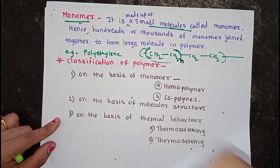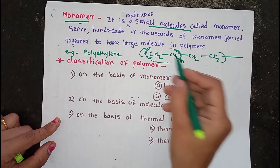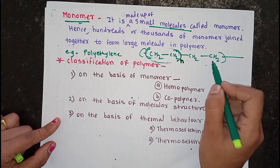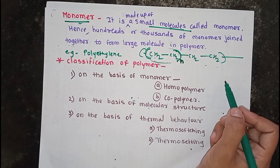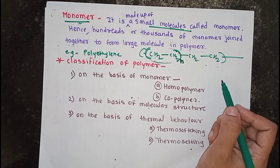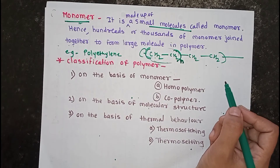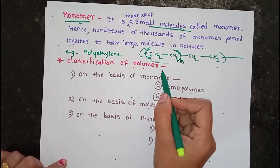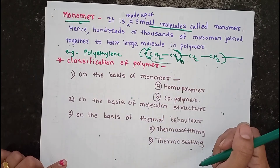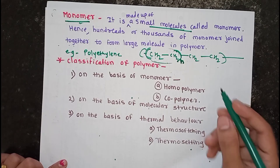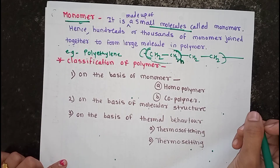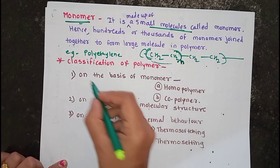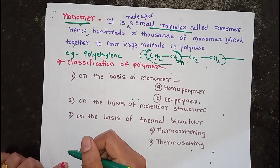Hundreds or thousands of monomers join together to produce a large polymer molecule. Now let's see the classification of polymers. Polymers are classified into three types: on the basis of their monomers, on the basis of their molecular structure, and on the basis of their thermal behavior.